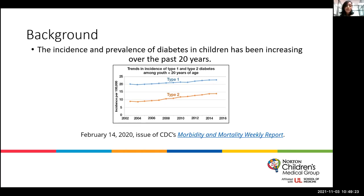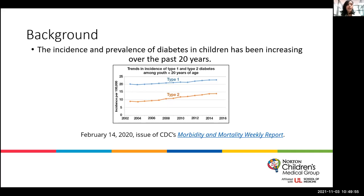There are about 5,000 new cases per year of type 2 diabetes, and interestingly, the prevalence increases with age, tripling from age 10 to 14 years to the prevalence at age 15 to 18 years. Between 2002 and 2015, the incidence of type 1 and type 2 diabetes increased in almost all age, sex, and race or ethnicity groups, so this is something we're seeing across a spectrum of patients from various backgrounds.